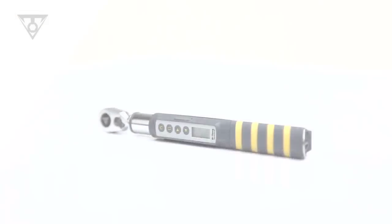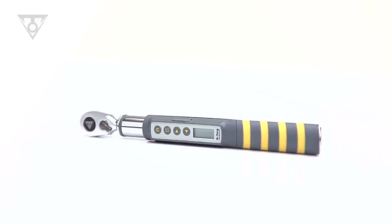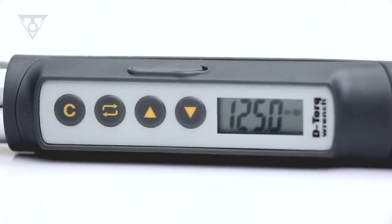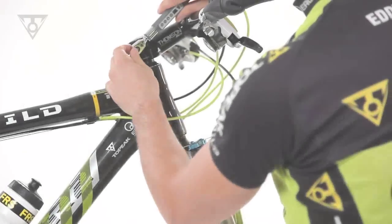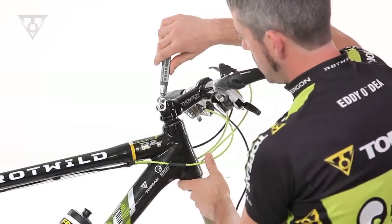The D-Torque is the most compact digital torque wrench on the market. Its lower torque range of 1 to 20 newton meters is perfect for securing bolts on the most delicate high-performance parts.